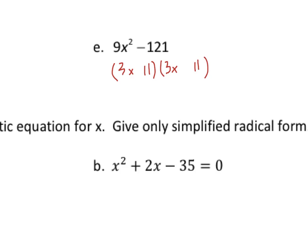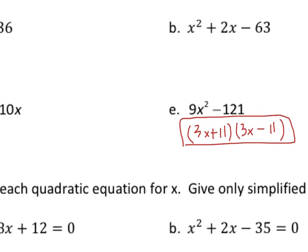So 3x and 11 are the numbers that multiply times themselves to equal the numbers given. So now it's just plus/minus: (3x + 11)(3x − 11). And if you were to FOIL that back, you would very quickly get 9x² − 121.